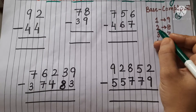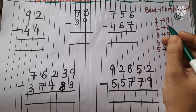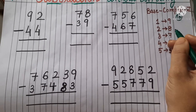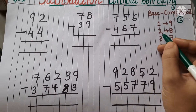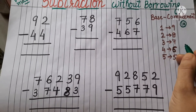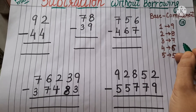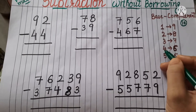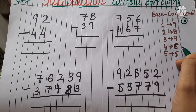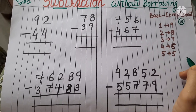In the same way, 2 plus 8 is 10, so 2 complement is 8 and 8 complement is 2. Then 3 complement is 7 because 3 plus 7 is 10. Then 4 complement is 6, and 5 complement is 5.